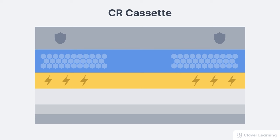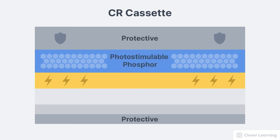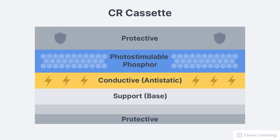The CR cassettes have protective outer cases and a photostimulable phosphor, called a PSP plate, made up of five key components. These components are the protective layer, phosphor layer, conductive or anti-static layer, support layer or the base, and reflective or light shielding layer.